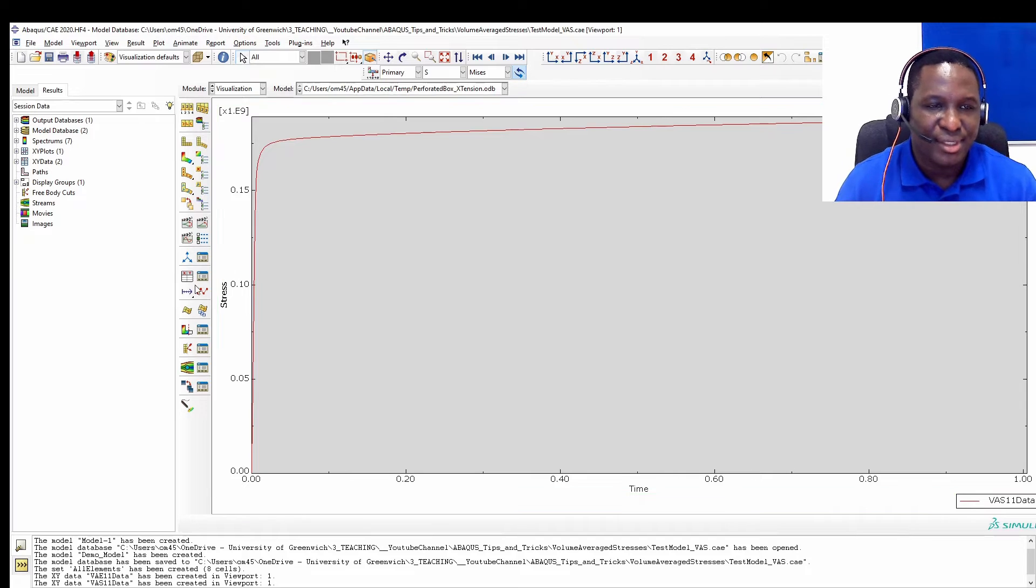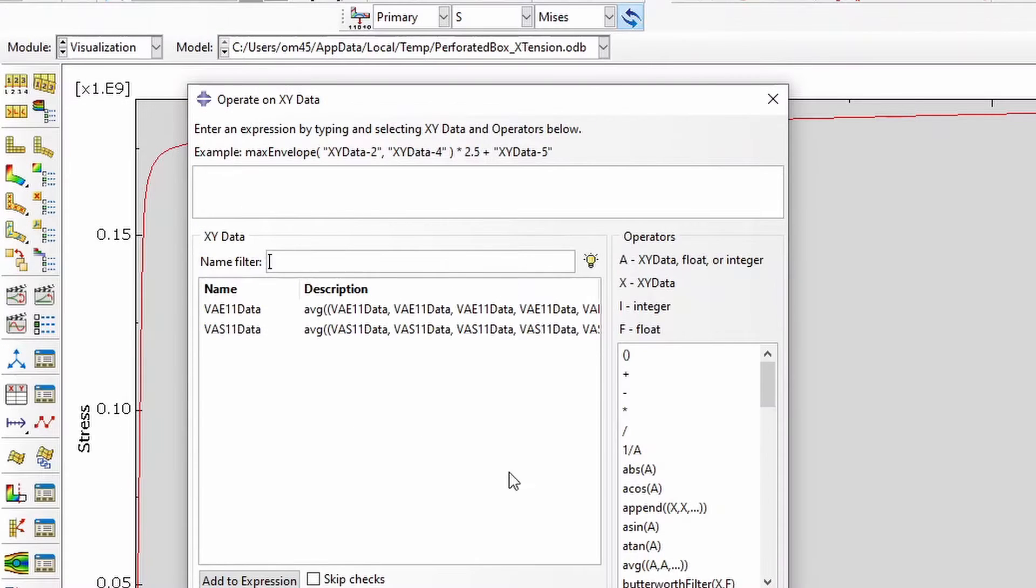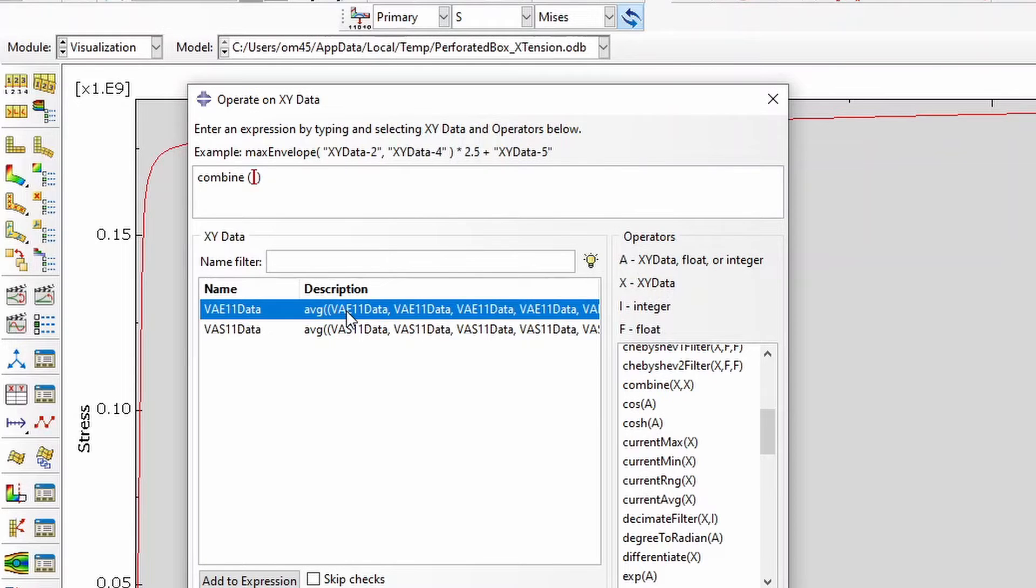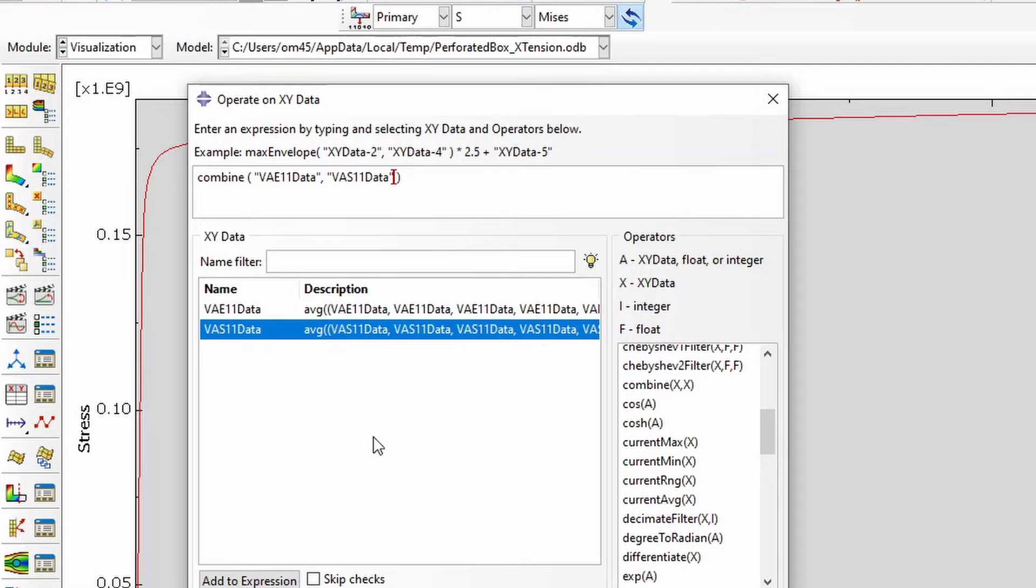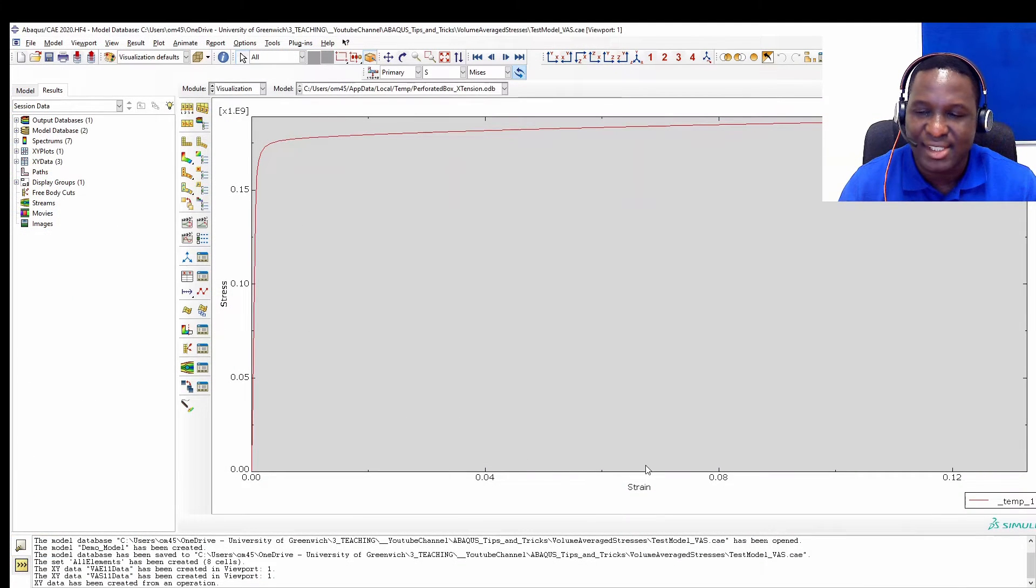Now what we need to do is, and they are volume averaged across the whole model. So the next thing we need to do is to operate on this data. So we operate on the XY data. So it comes up with this window. You just need to go to where the combine option is. So that's the combine option. You're going to combine the X data, which is the volume data, double click on that, and then the stress data, double click on that, and then you plot the expression. So you now have a combined stress strain data, which is the main result that we want.